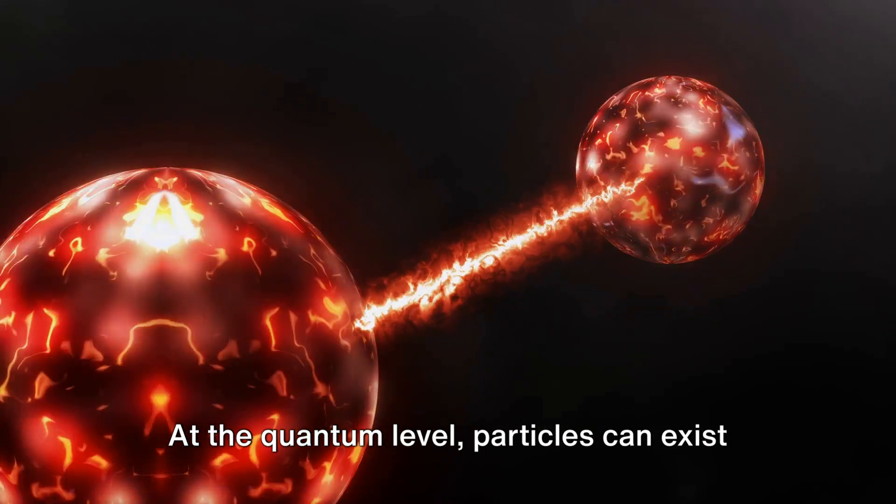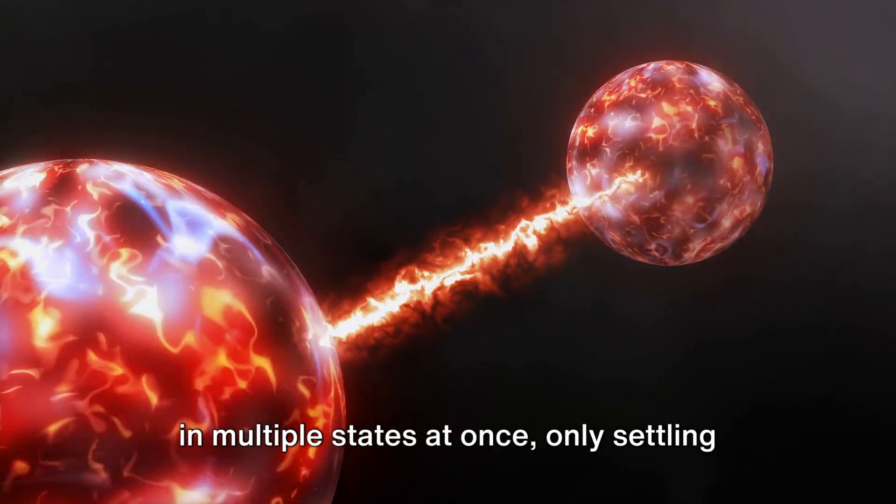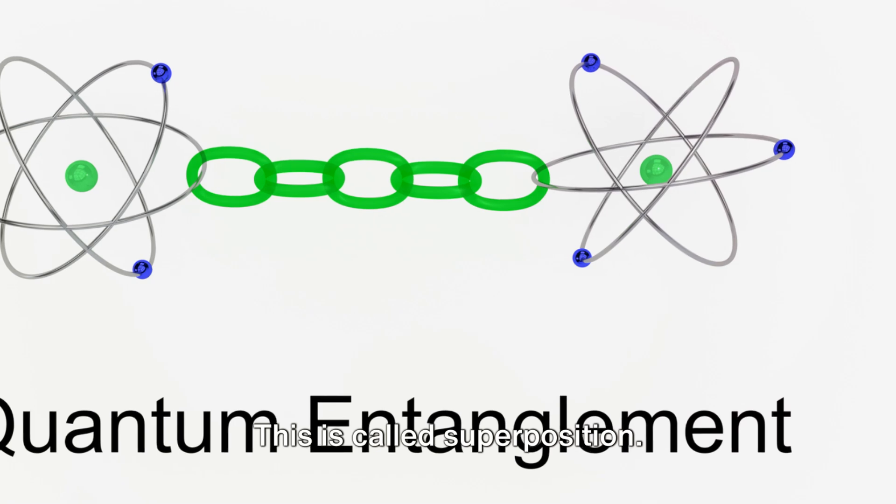At the quantum level, particles can exist in multiple states at once, only settling into a single state when they're observed. This is called superposition.